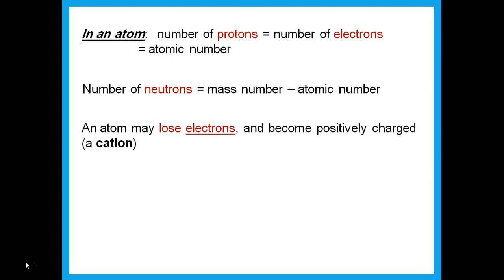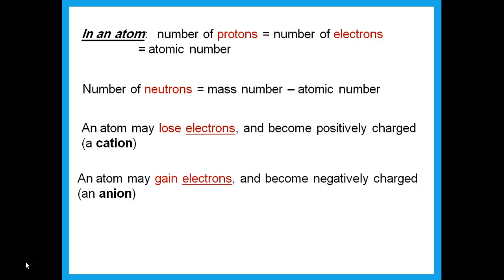An atom may lose or gain electrons. Originally an atom has equal protons and electrons, so it is overall neutral. Atoms only lose or gain electrons, not protons. If it loses electrons, it has extra positives and becomes a positively charged ion called a cation. If it gains electrons, it has extra negatives and becomes a negatively charged ion called an anion.